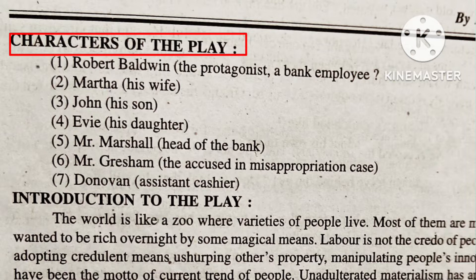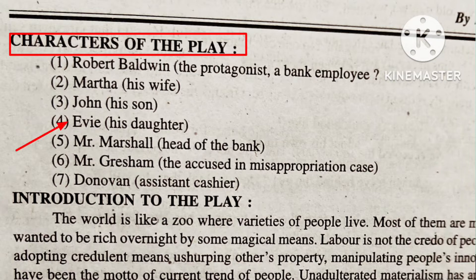Before we begin, let us know the characters of the play. Number one: the chief character Robert Baldwin, the protagonist, a bank employee. Number two: Martha, his wife. Number three: John, his son. Number four: Ivy, his daughter. Number five: Mr. Marshall, head of the bank.